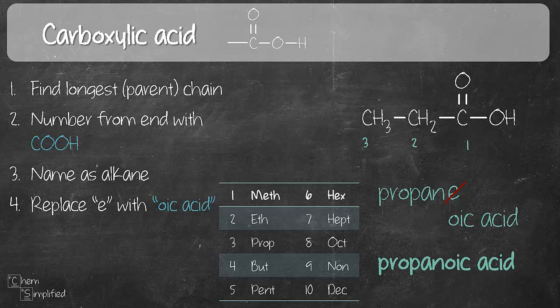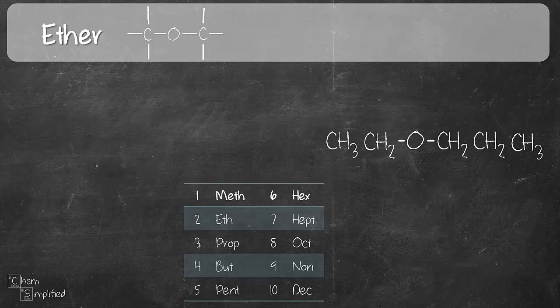We have now named alcohol, amine, amide, aldehyde, ketone, and carboxylic acid. All we've done is name them as an alkane, slash out the E, and replace it with the appropriate suffix. Now we're going to move on to something slightly different — I'll walk you through it step by step, so don't worry.